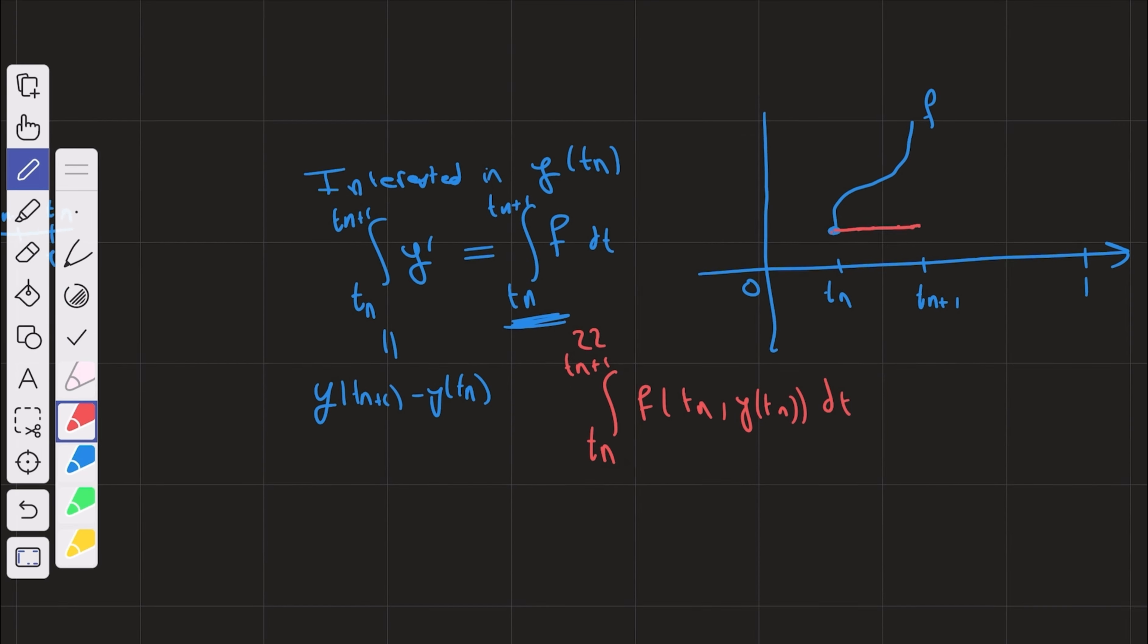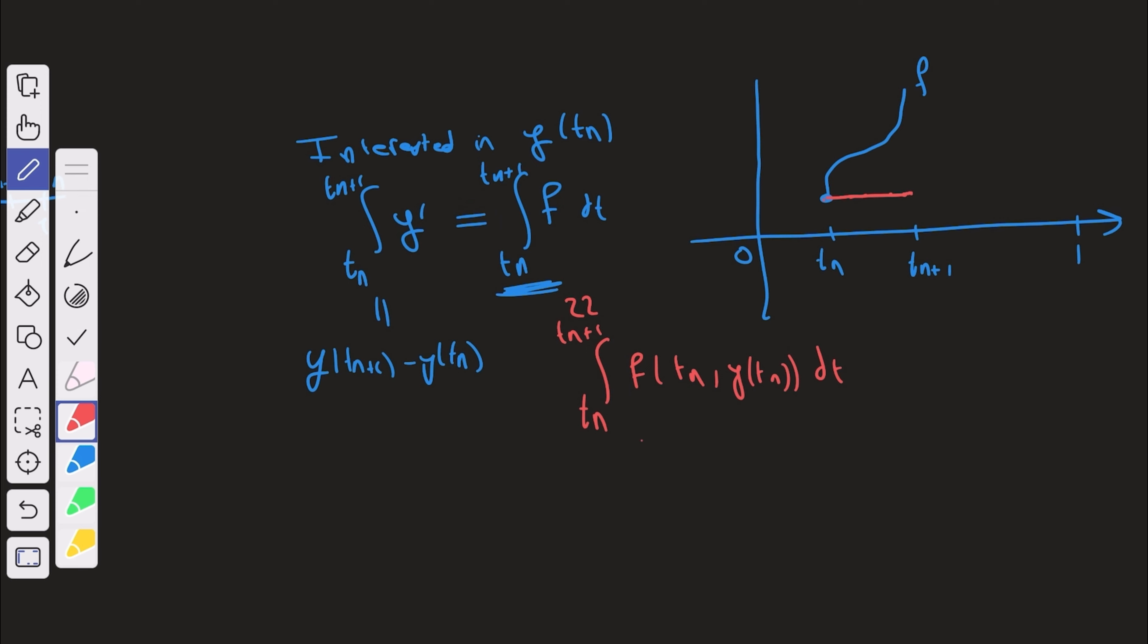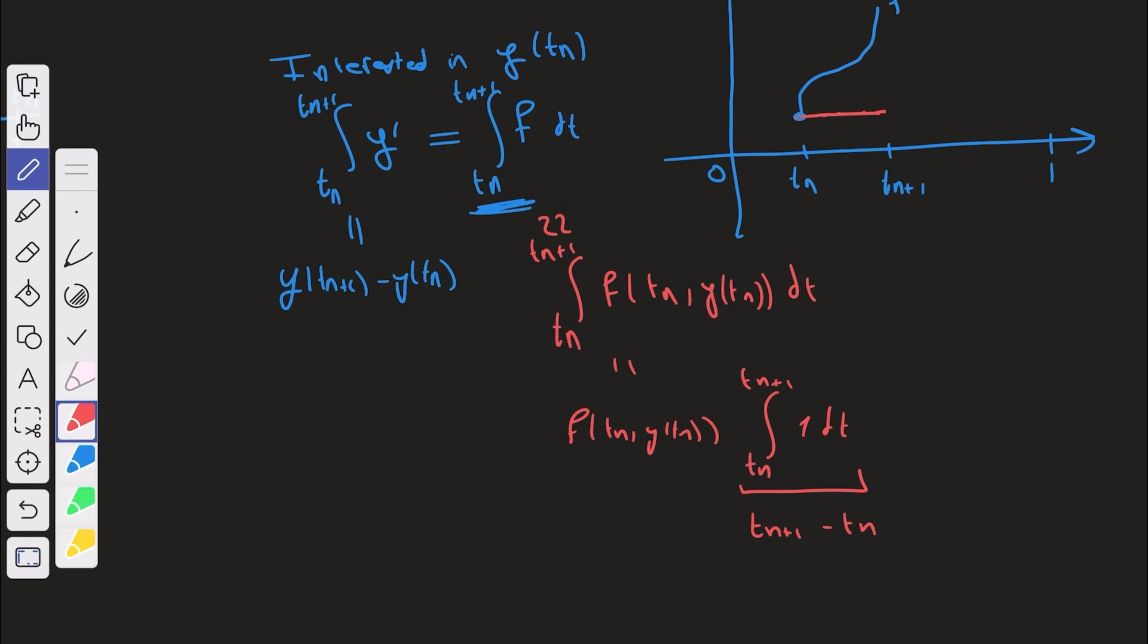And now what is this? What is this integral? This integral is just, now this is a constant independent of t. We can pull it outside and we have f of tn, y of tn, and the integral of tn to tn plus 1 of 1 dt. Now what is this? This is just tn plus 1 minus tn. But we've actually taken tn's to be equidistant with distance h. So this is just h.